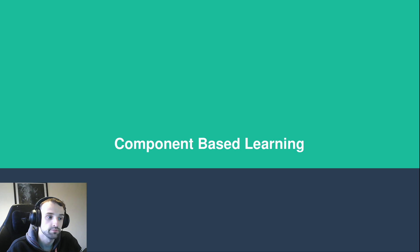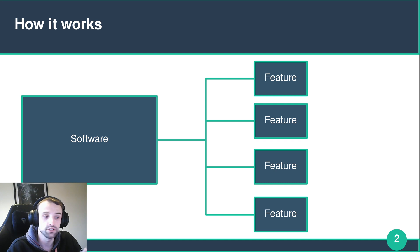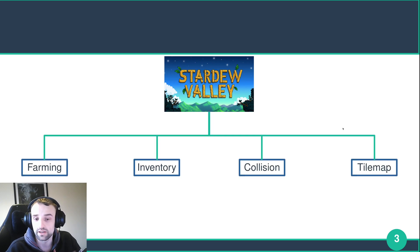A method of learning that I like to use that has been working very effectively for me is a component-based learning approach. The idea is that you have a big piece of software or game that you're looking to make, and then you split it up into different features and evaluate how you're going to need to implement those features. If we look at our Stardew Valley example and split that into components, we can imagine it something like this.